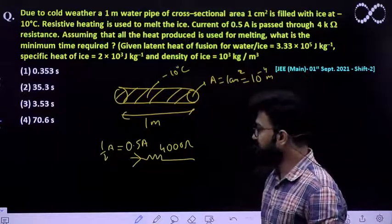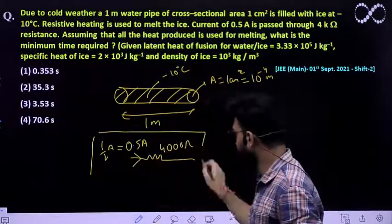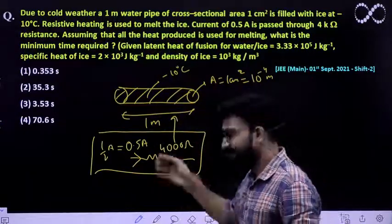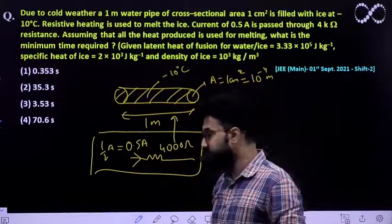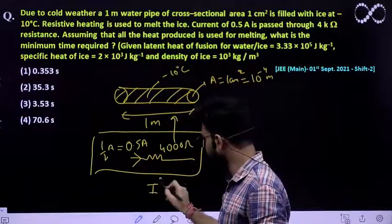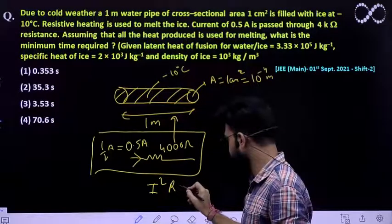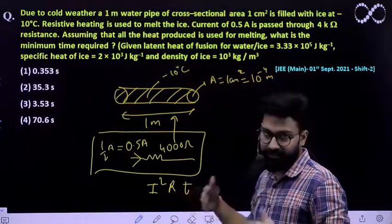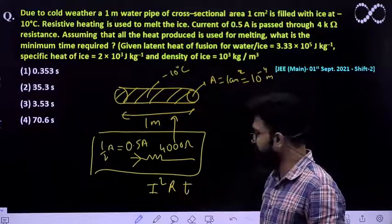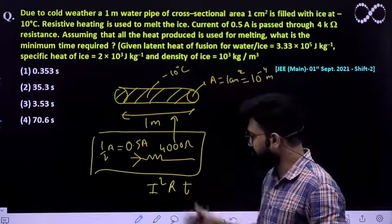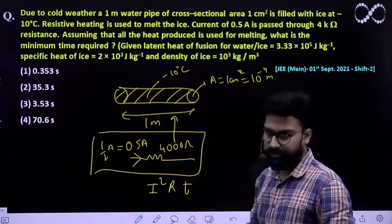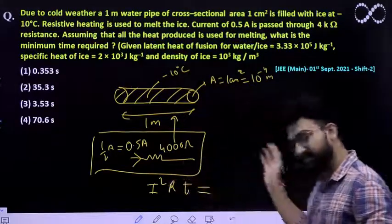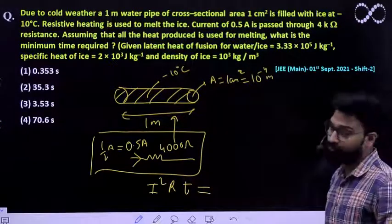The heat produced across the resistor will go to melt the ice. The heat produced across the resistor is I²RT, where T is the time taken to melt the ice. R and the current are both given. This must equal the heat supplied to the ice to melt it.